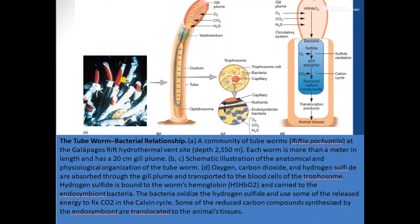How does the bacteria survive here? The bacteria lives in association with the tube worm itself. Within the tube worm there is a gill plume, which is the sea lung of this tube worm, and within it the bacteria are associated. The bacteria gets a house for its living and stays within the tube worm so that it can overcome the high temperature and hostile environment present near the hydrothermal vent.